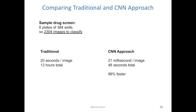Let's briefly compare the traditional approach with a convolutional neural network approach and see what speedup we can achieve. When running drug screen experiments, you want to test many drugs at the same time to find those that produce the desired effect on your model. Let's assume we had six plates of 384 chambers containing worms with a different drug in each chamber.